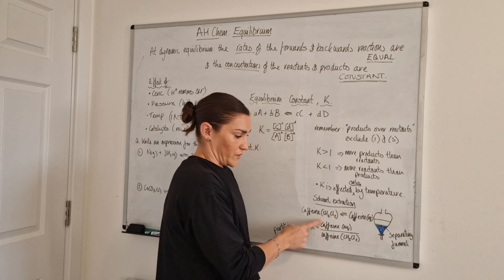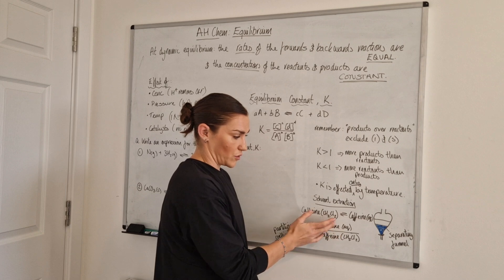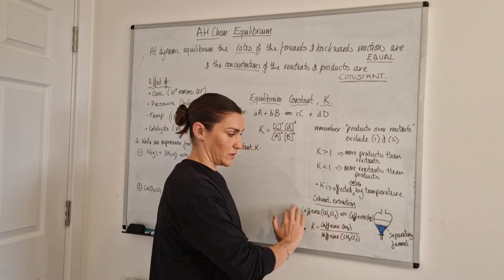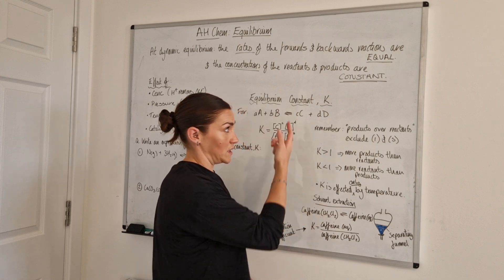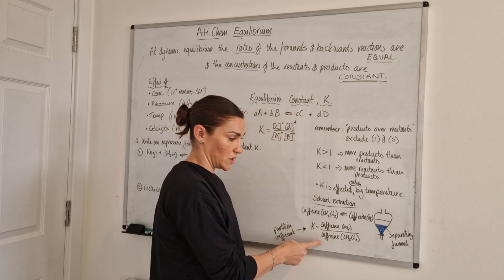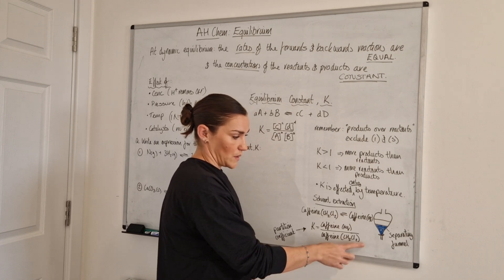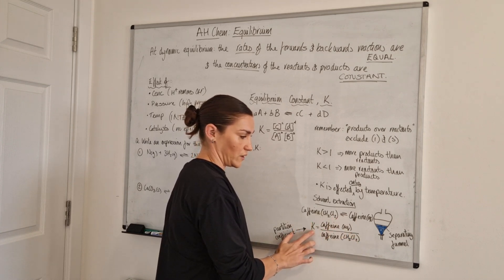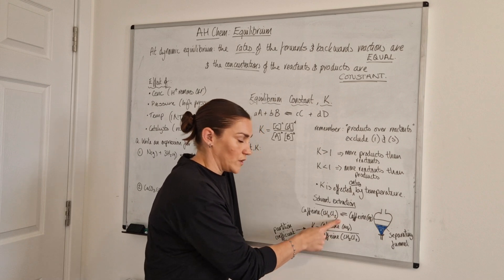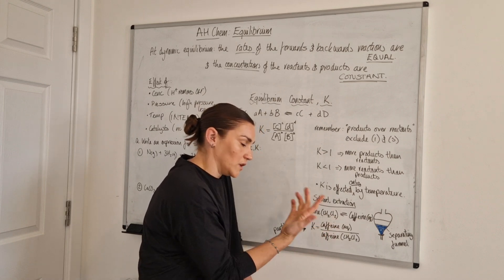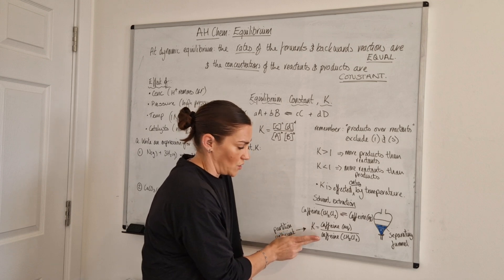You can write an expression for the partition coefficient just like writing an equilibrium constant expression — it's still products over reactants. Remember, the only thing that can change the value of the partition coefficient is temperature. It doesn't matter if you add more solvent, more water, or more coffee; the partition coefficient will not change unless you change the temperature.